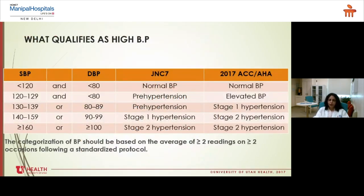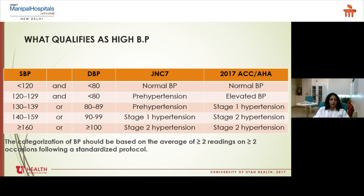Let me define what high blood pressure is. Guidelines keep changing from time to time, but on average, if your blood pressure is more than 130 by 80 — for all adults — this means we have high blood pressure. Depending on further increase in pressure we stage it, and we conclude this based on an average of two readings taken on two different occasions, following a standardized protocol.